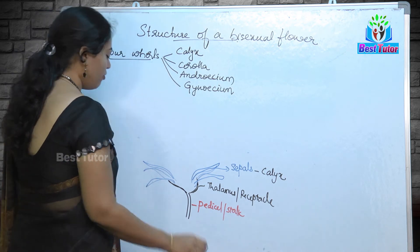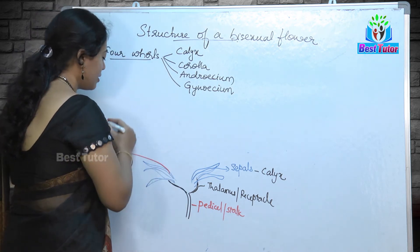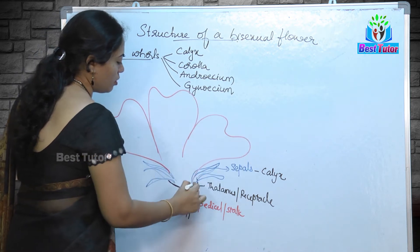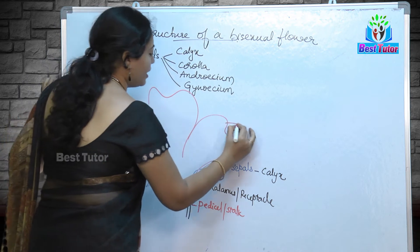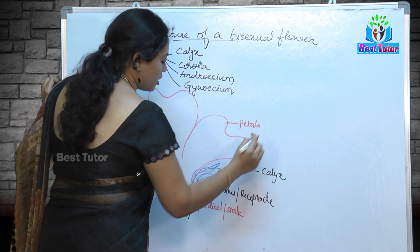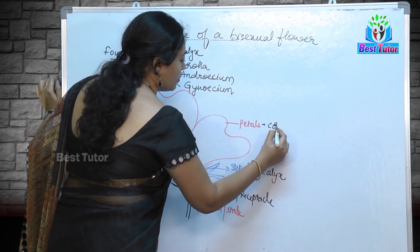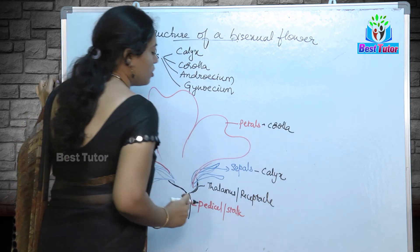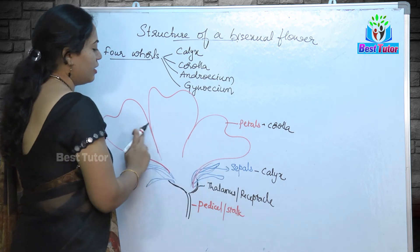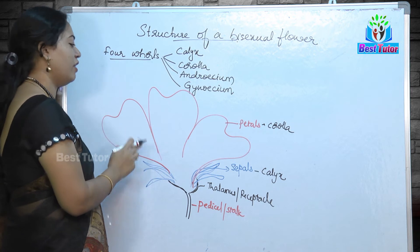After calyx, we have the second whorl, known as corolla. The petals are collectively known as corolla. All the sepals form calyx, and the petals collectively form corolla, which is the second whorl of a flower.